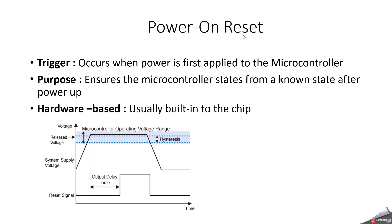First, let's start with power on reset. Power on reset occurs when power is first applied to the microcontroller. When power is first applied, the microcontroller supply voltage gradually rises. The power on reset circuit monitors this voltage and triggers a reset sequence when the voltage reaches a specific threshold.